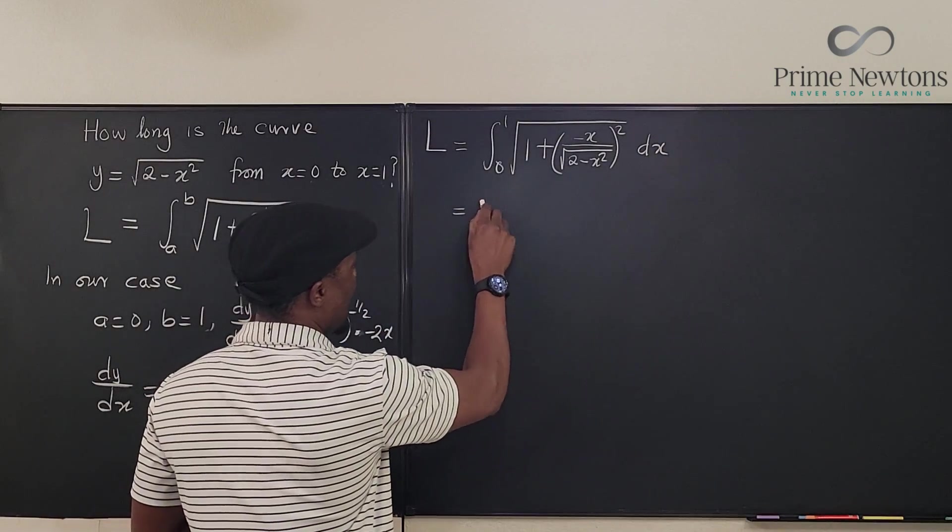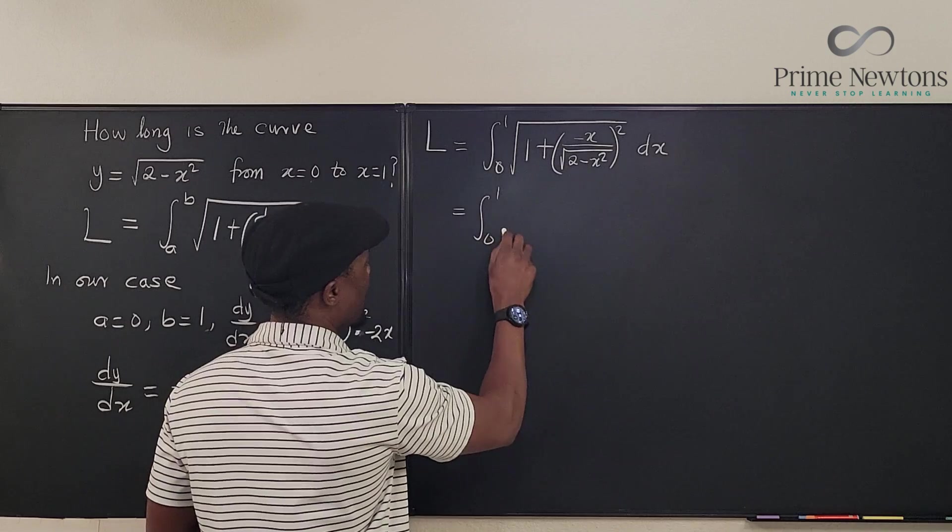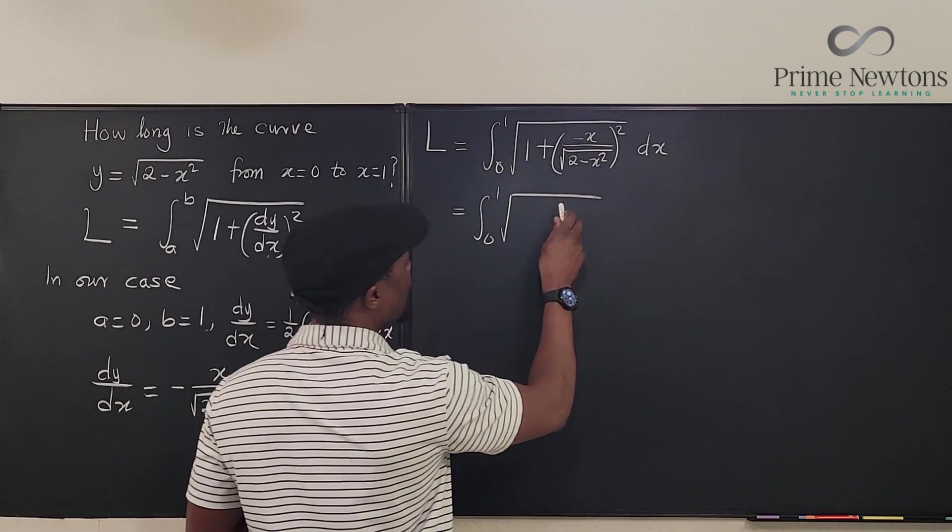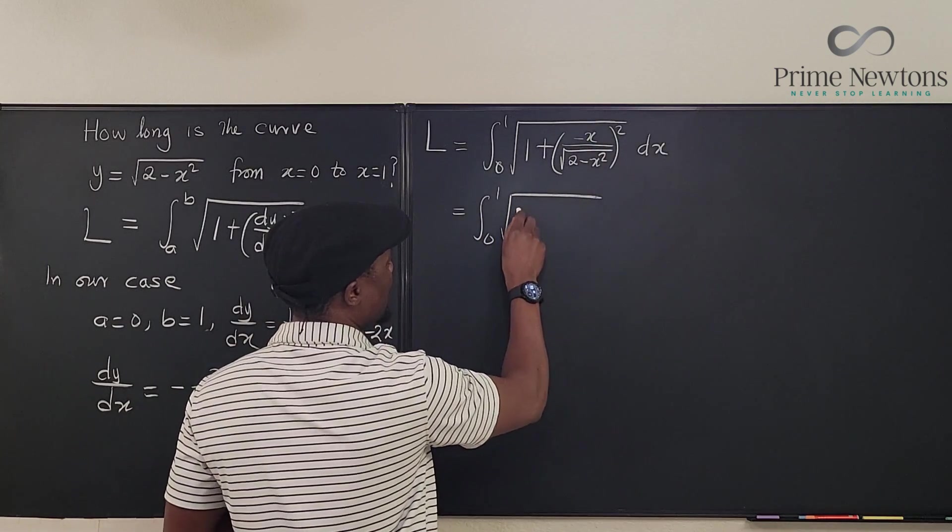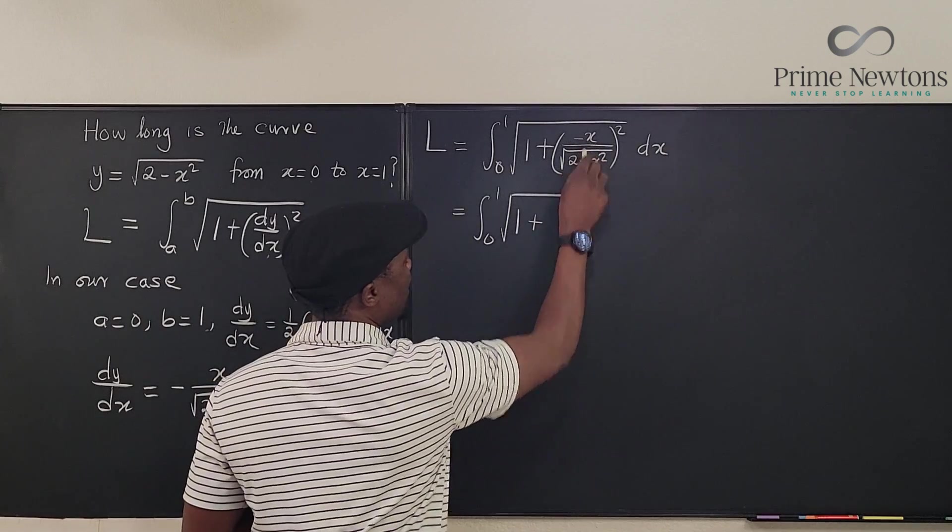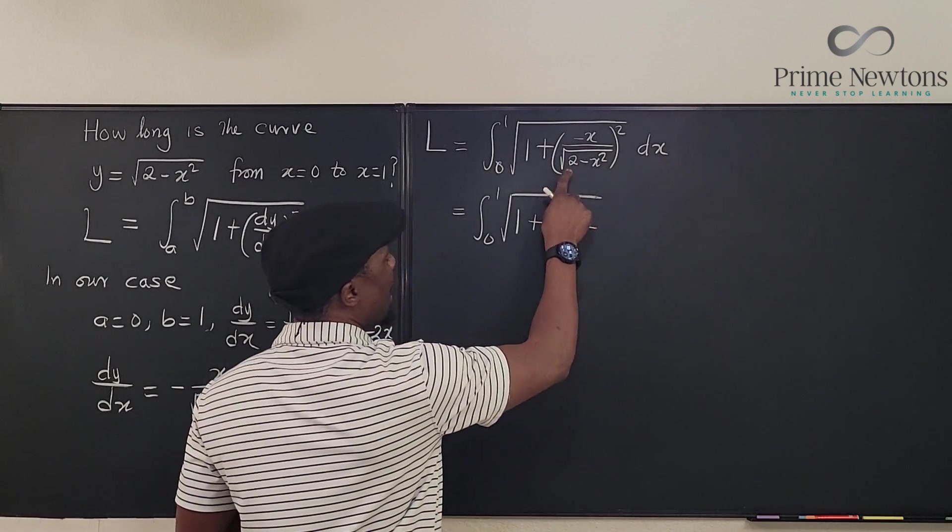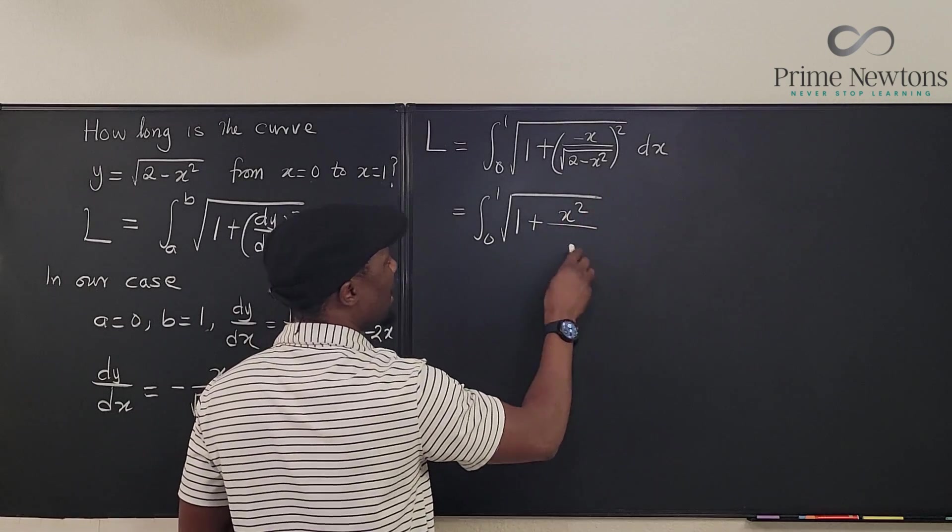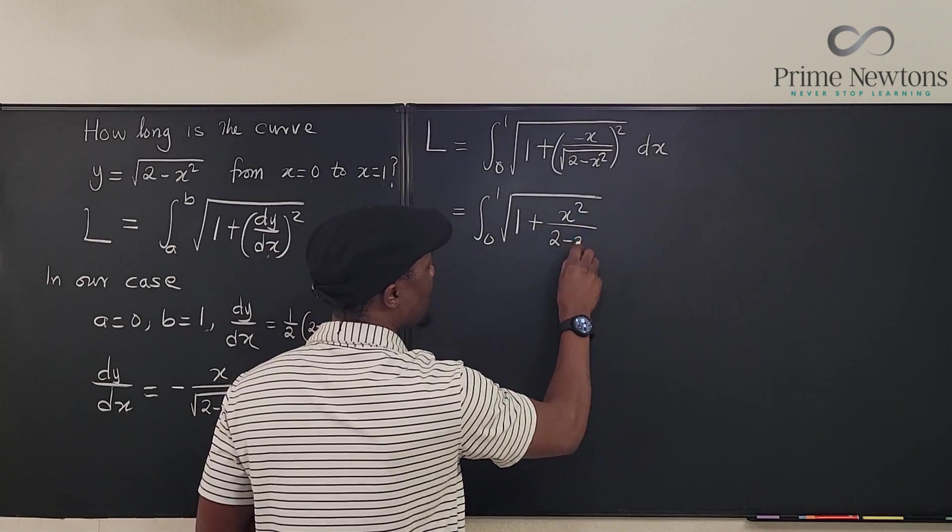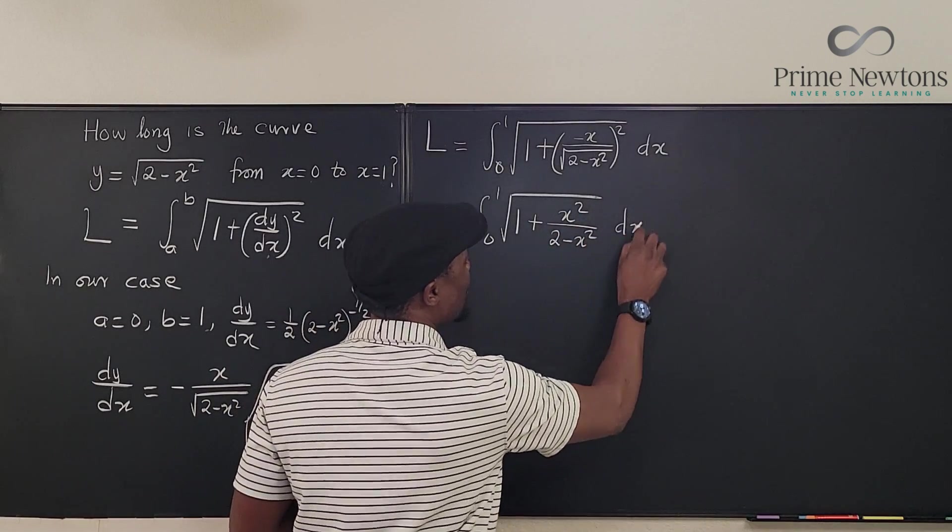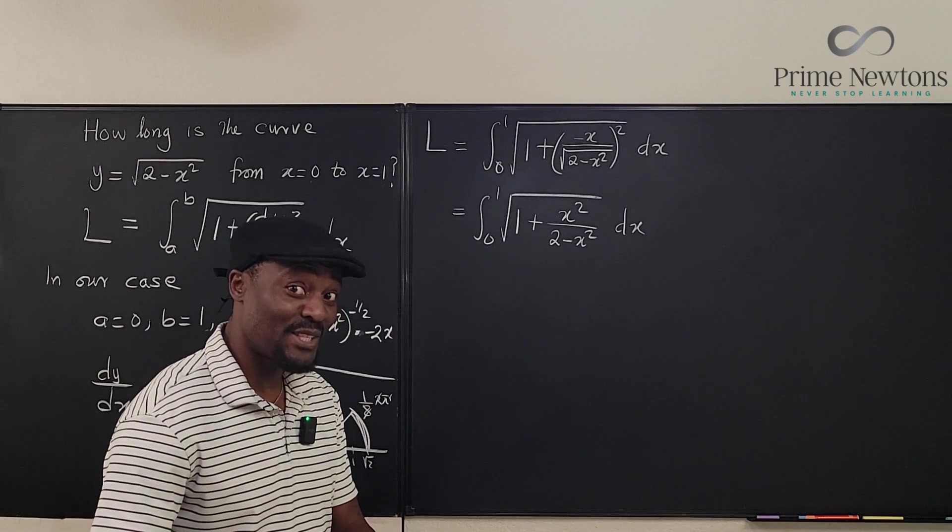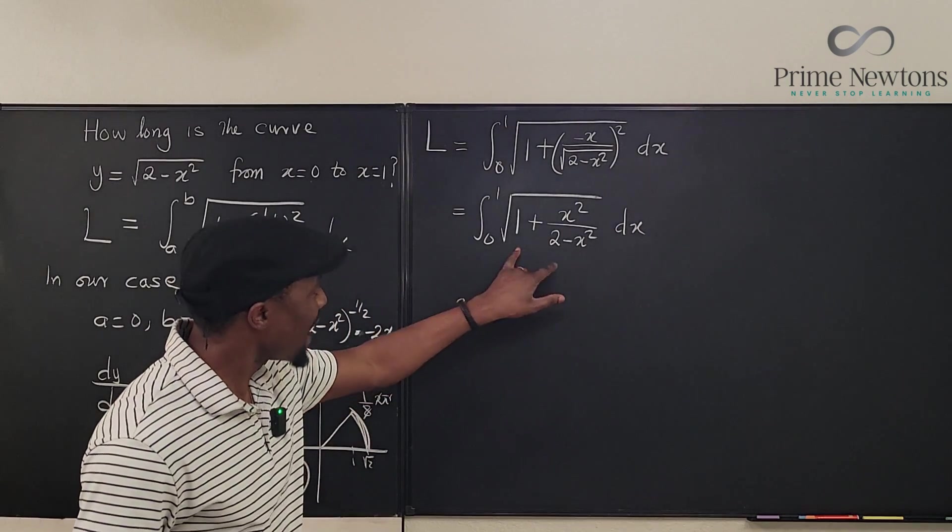This is the same thing as the integral from 0 to 1 of the square root of... if we square this guy, we're gonna end up with 1 plus... this minus will disappear. So we have x² over... and this square root sign is gonna disappear. So you have 2 - x². I told you it always simplifies into something nice.